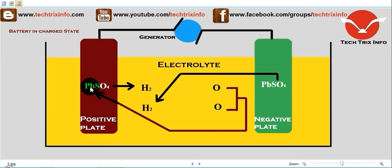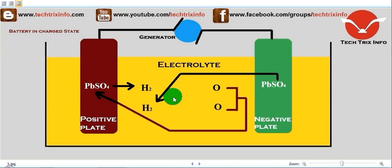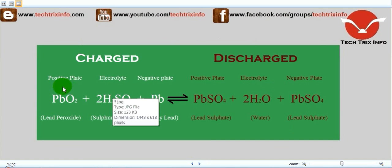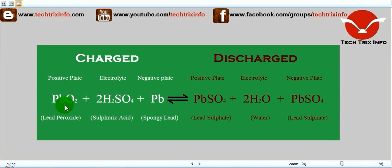Two oxygen atoms join back with the lead in the anode and become PbO2 — lead peroxide. The sulfate joins with the hydrogen and becomes H2SO4, that is sulfuric acid. From the cathode side as well, sulfate comes out and joins the hydrogen. So during charging, the positive plate has PbO2 (lead peroxide), the electrolyte is sulfuric acid, and the negative plate has spongy lead.